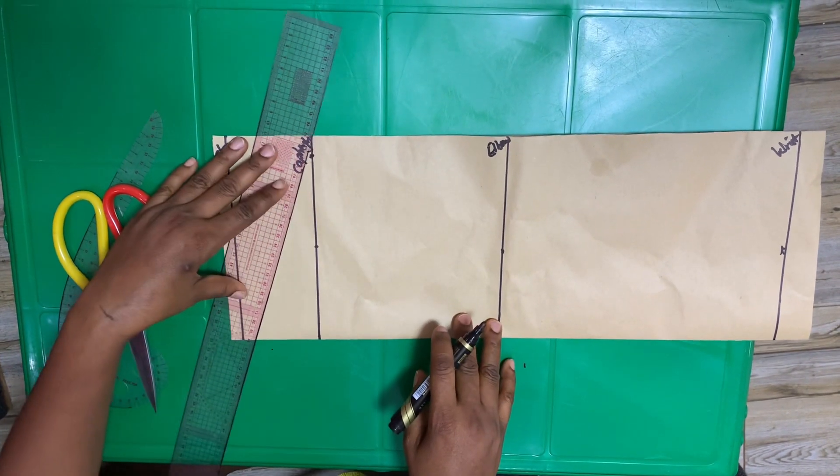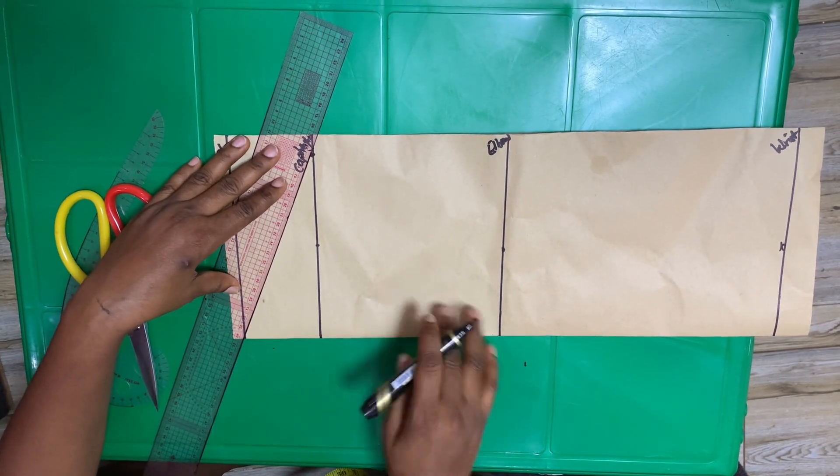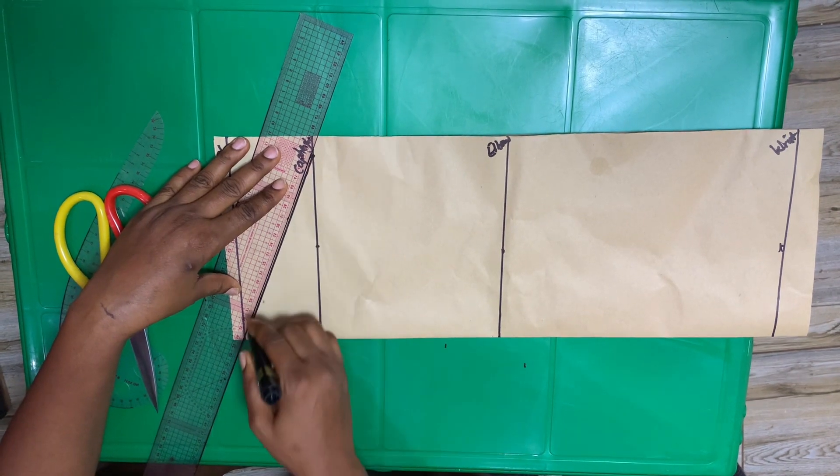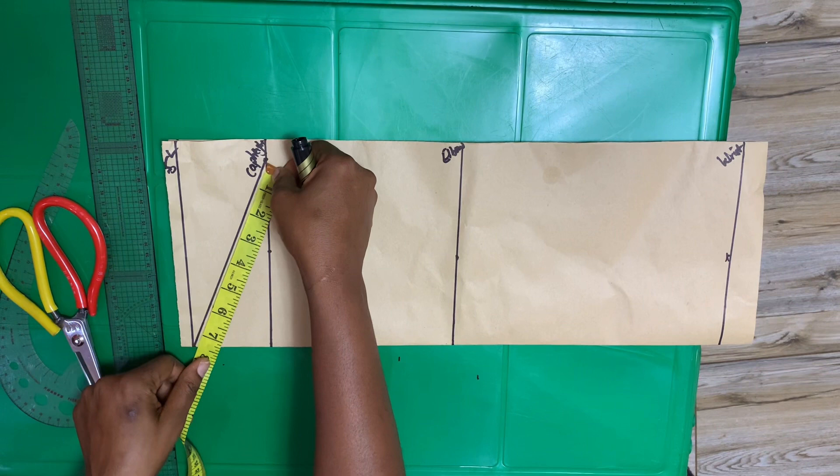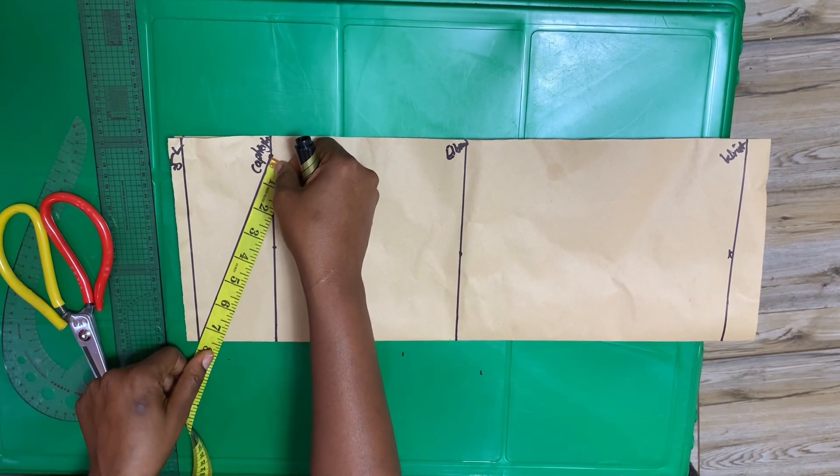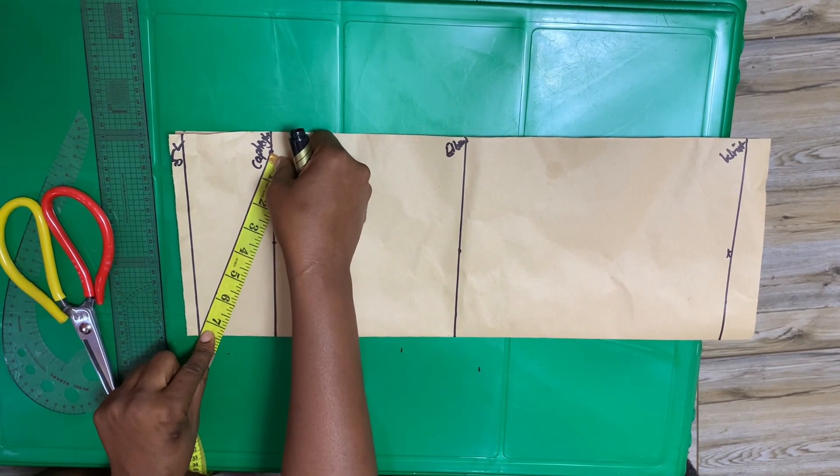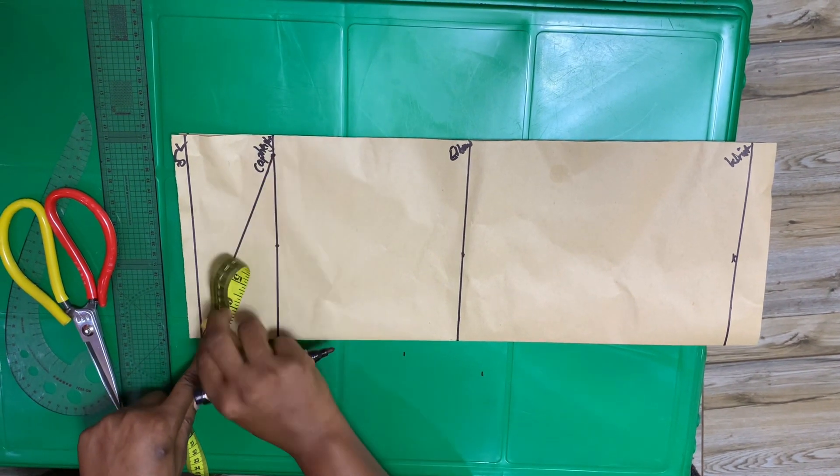After you get your cap height, I will mark out 7 inches, which is half of the armhole. The armhole is 14, half is 7 inches. I will draw a slant line to meet the starting line.